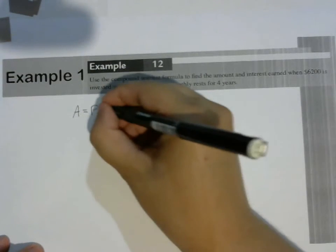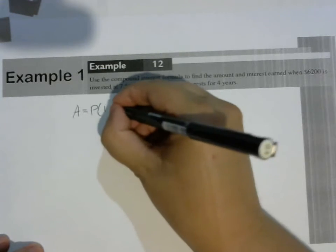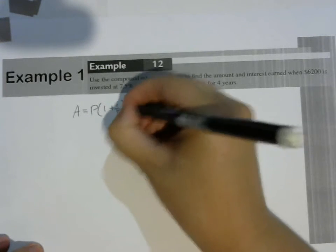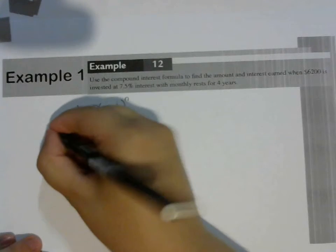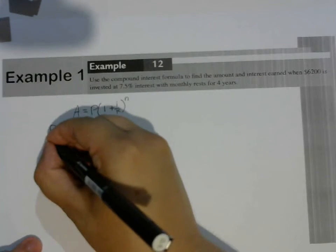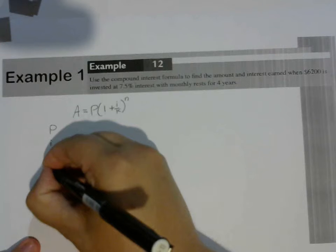I'm going to start with my rule. A equals P, open bracket, 1 plus I over K to the power of N. And I'm going to list my values down the side: P, I, K, N.